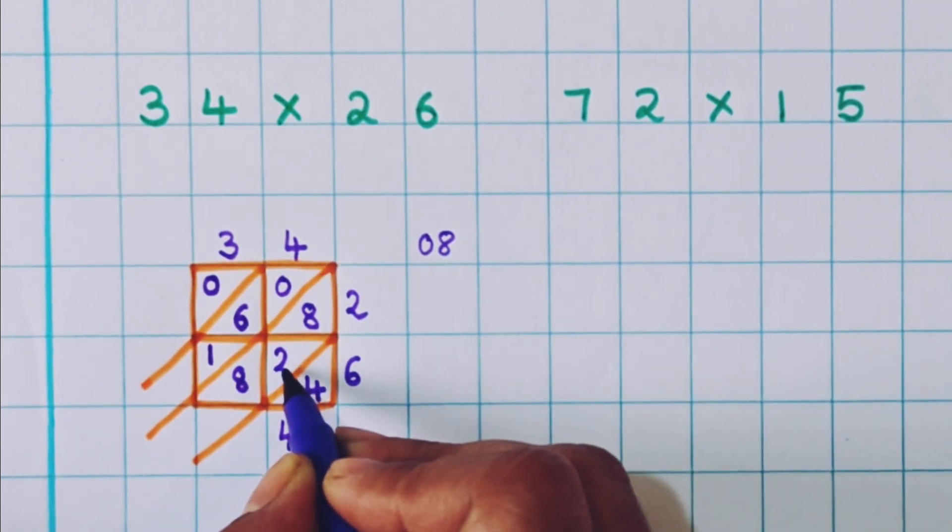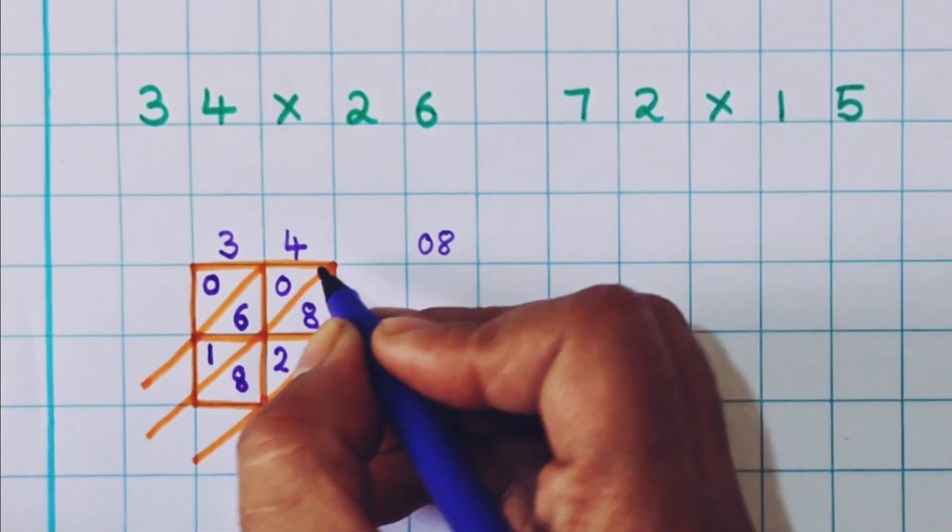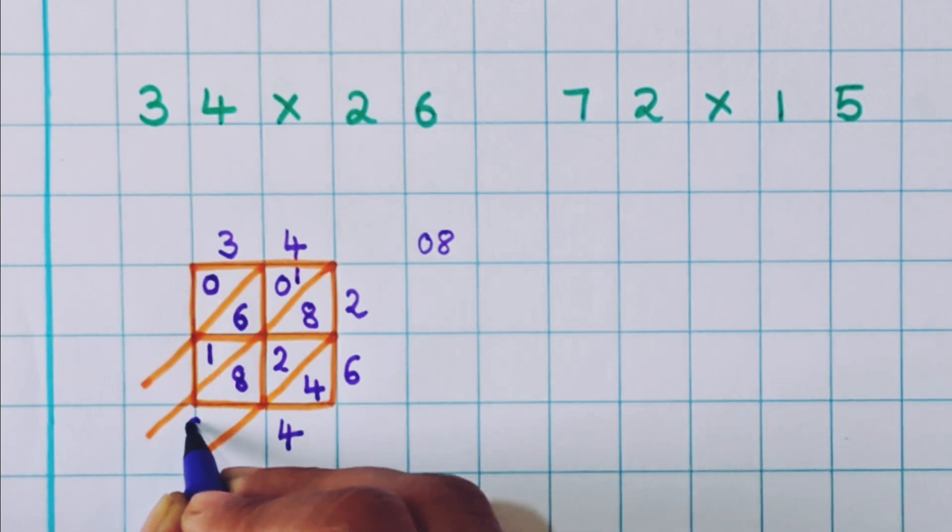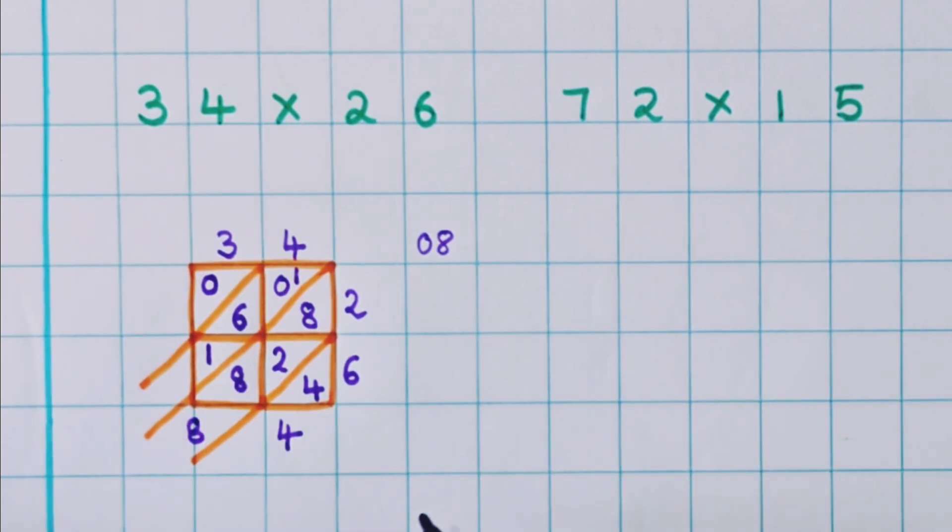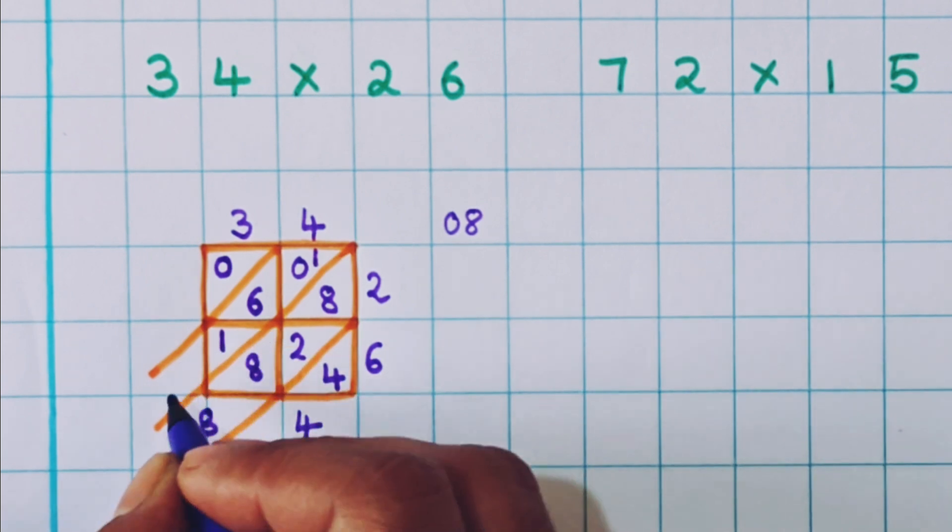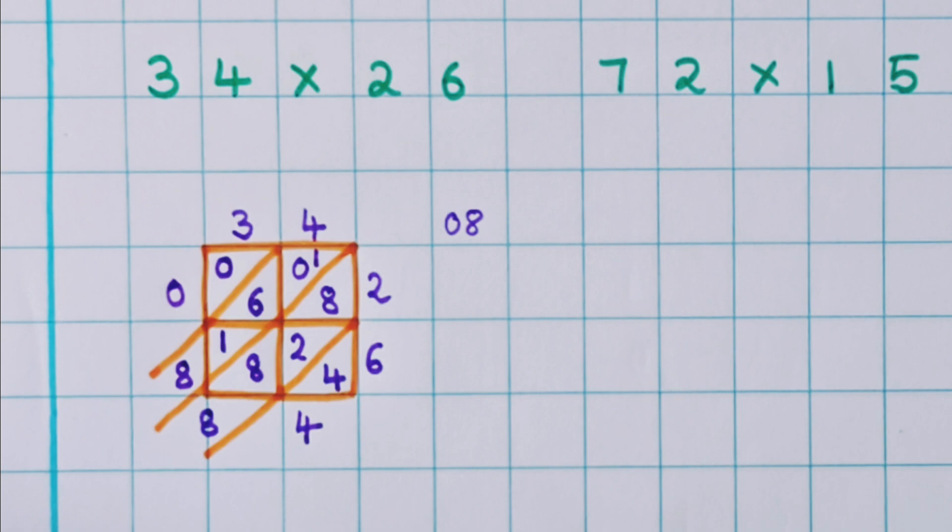Now 8 plus 2 is 10. 10 plus 8 is 18. So 18 is a two digit number. So 1 I will write as a carry over and 8 I will write here. Now 1 plus 6 is 7. 7 plus 1 is 8. So here I will write 8 and 0 plus nothing, 0.